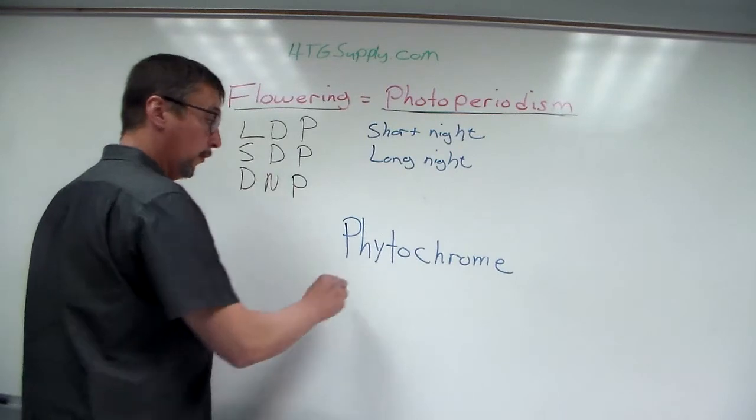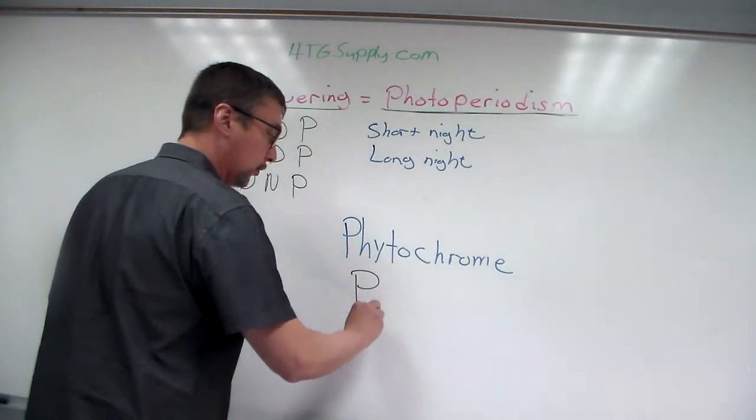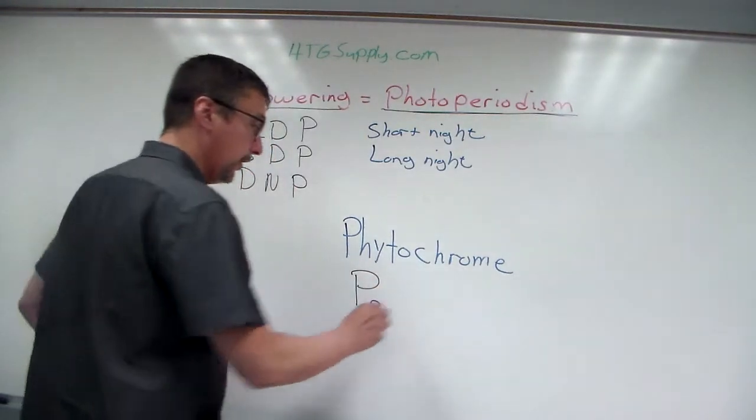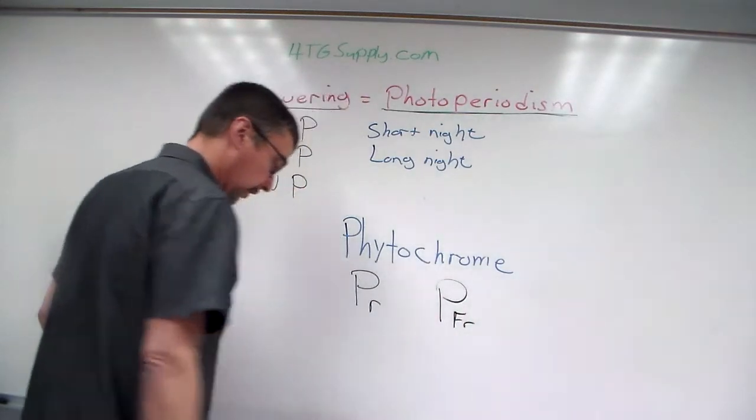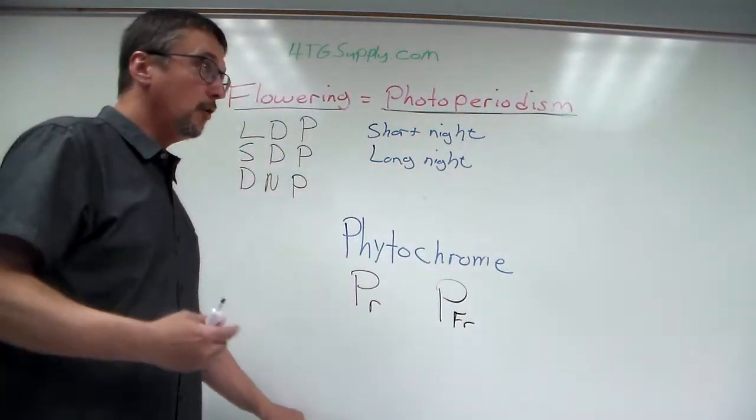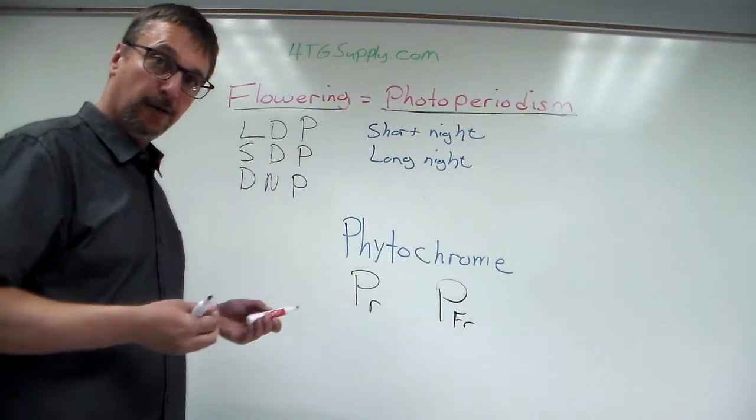Phytochrome exists in two forms. There is what's called phytochrome red. And there is phytochrome far red. And it is the ratio of these two forms that determines flowering.